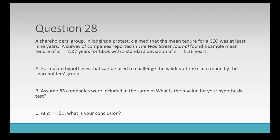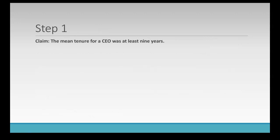So the way we're going to work through this is our seven step process. The first step is to write down the claim. So the claim is that the mean tenure for a CEO was at least nine years. Another way we can write that is mu is greater than or equal to nine.